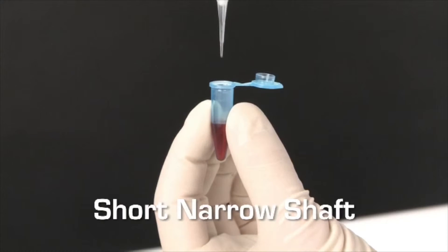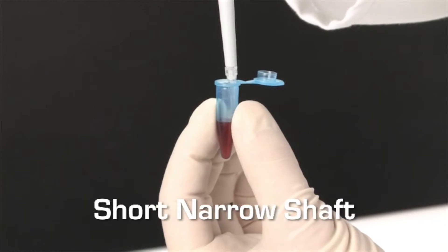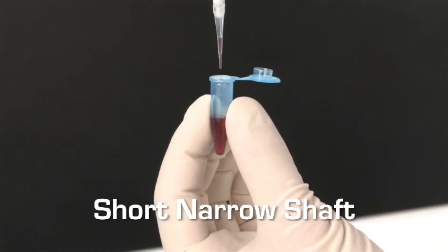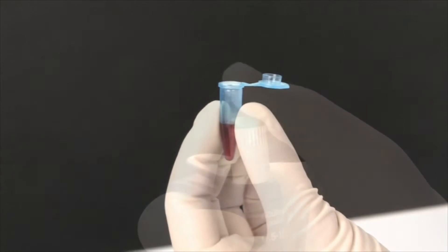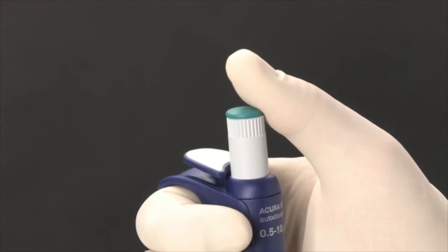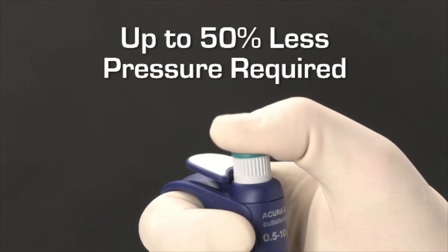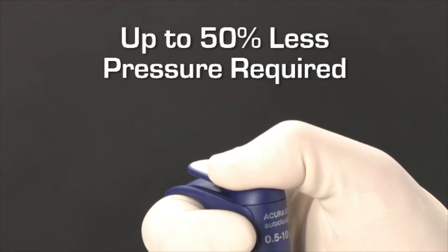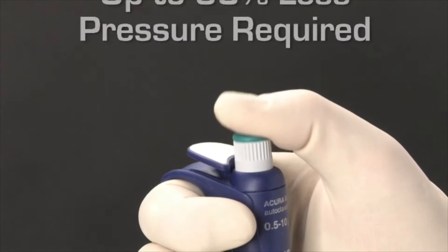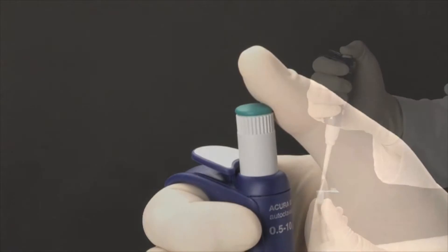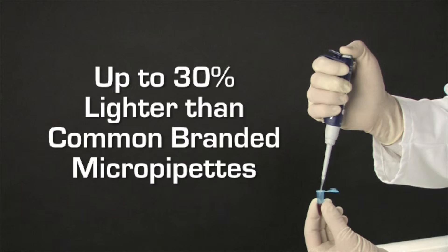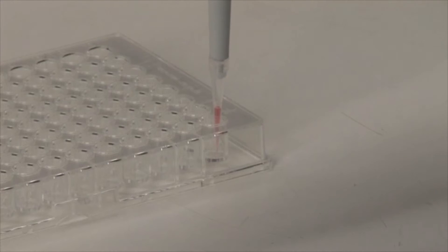The short, narrow shaft enables dispensing into the tighter opening of smaller microtubes without contaminating the procedure. A newly designed plunger seal provides extremely smooth, stable action to maintain steady handling while dispensing and to further reduce hand fatigue. The reduced weight makes it effortless to control while performing delicate tasks.